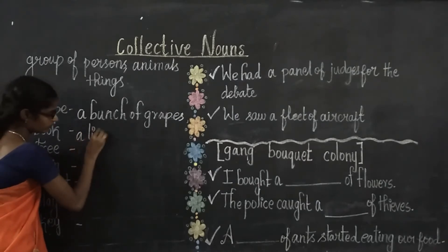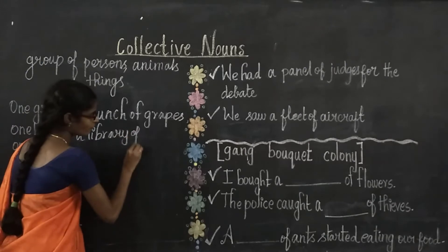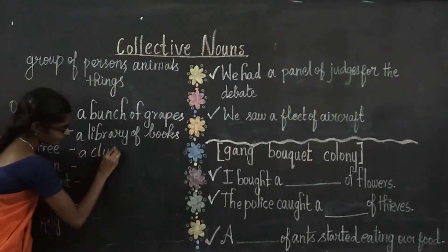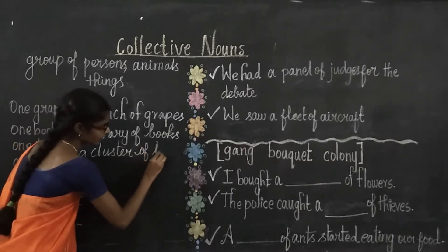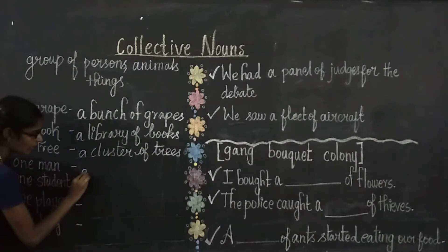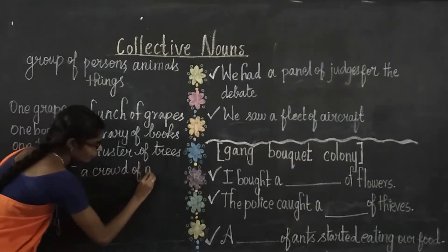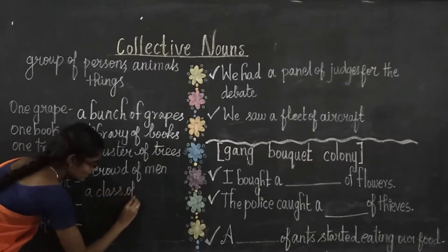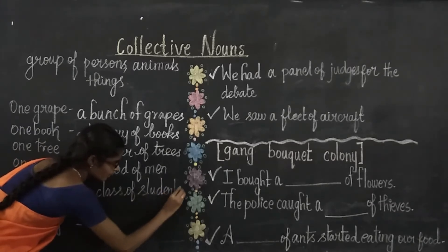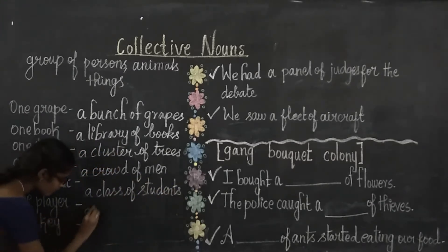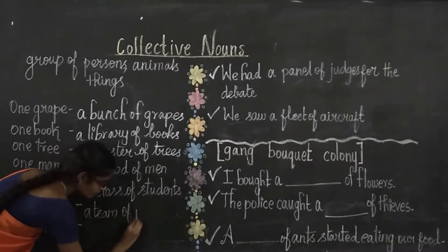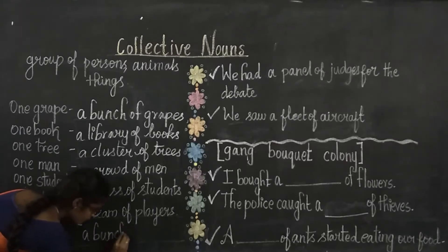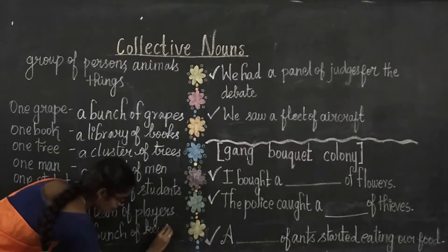One book — a library of books. One tree — a cluster of trees. One man — a crowd of men. One student — a class of students. One player — a team of players. One key — a bunch of keys.